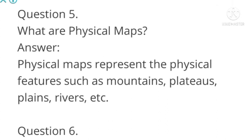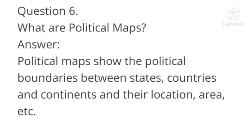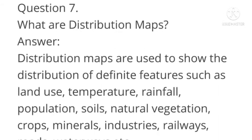Question number five: What are physical maps? Answer: Physical maps represent the physical features such as mountains, plateaus, plains, rivers, etc. Question number six: What are political maps? Answer: Political maps show the political boundaries between states, country, and continents and their location, area, etc.